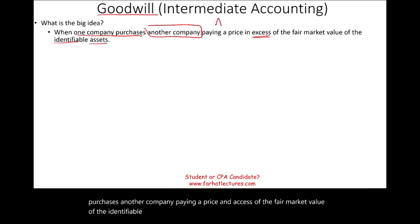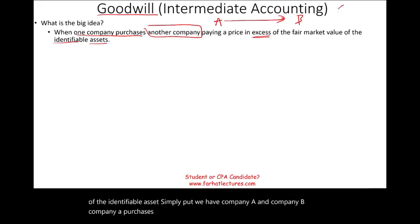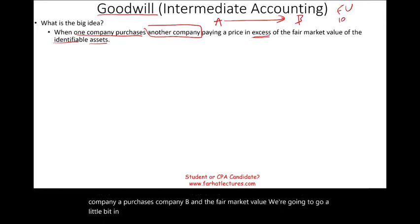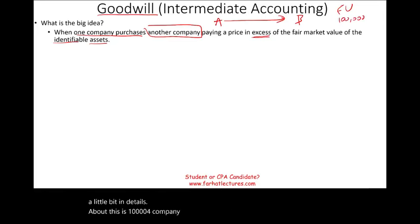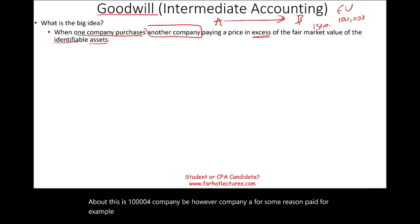Simply put, we have Company A and Company B. Company A purchases Company B, and the fair market value is $100,000 for Company B. However, Company A paid, for example, $150,000 — they paid $50,000 in excess of the fair market value of Company B.